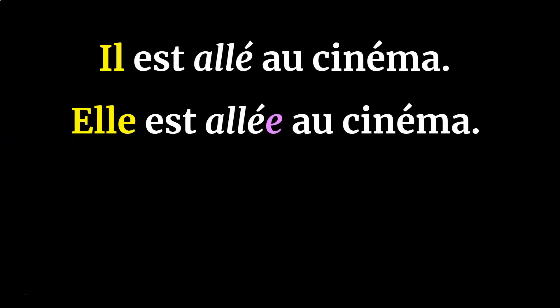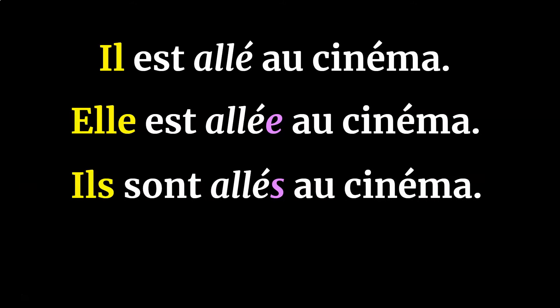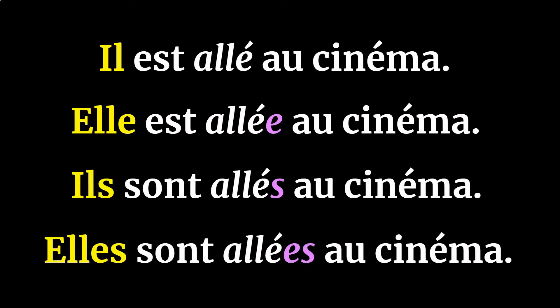One thing you have to know with these Doctor and Mrs. Vandertramp verbs is that you have to make sure the past participle agrees in gender and number with the subject. So for elle est allée au cinéma, you add the -e because it's a female subject doing the action. For ils sont allés, you add the -s because it's a group of males or mixed group. And for elles sont allées, you add the -es because it's a group of females doing the action.